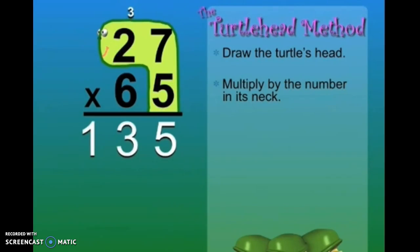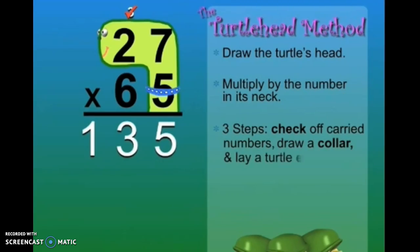Now there are three important steps before we go on. Check off carried numbers. Draw a collar and lay a turtle egg. Zero.